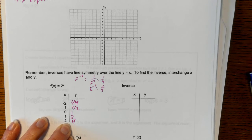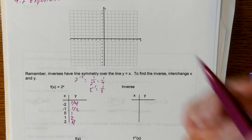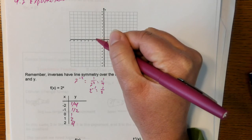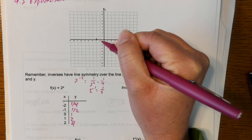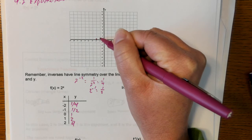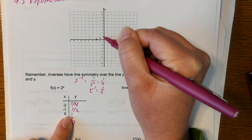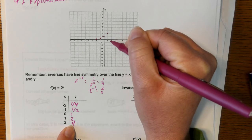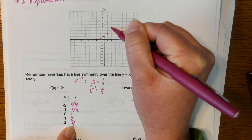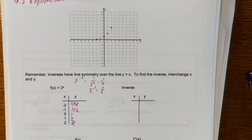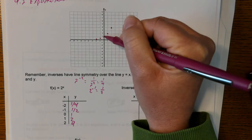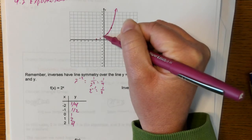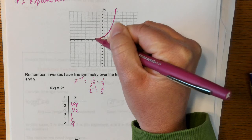We talked about those in section 2.2, so that should be nothing new. We're going to plot those points. When x is negative 2, y is 1 fourth. When x is negative 1, y is 1 half. When x is 0, y is 1. When x is 1, y is 2. And when x is 2, y is 4. We graphed that the other day, so we're familiar with what it looks like. Connecting those dots gives a really nice graph.